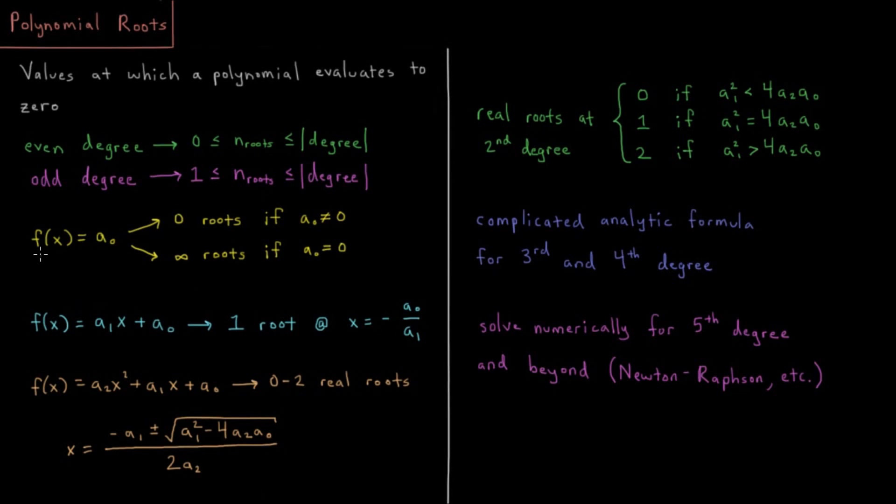So the simplest case would be a constant function. There are two different cases for constant functions. The first is where the function equals some non-zero value, so you have zero roots in that case because the function is never equal to zero. If f(x) equals 4, well 4 is never equal to zero, so you have zero roots.